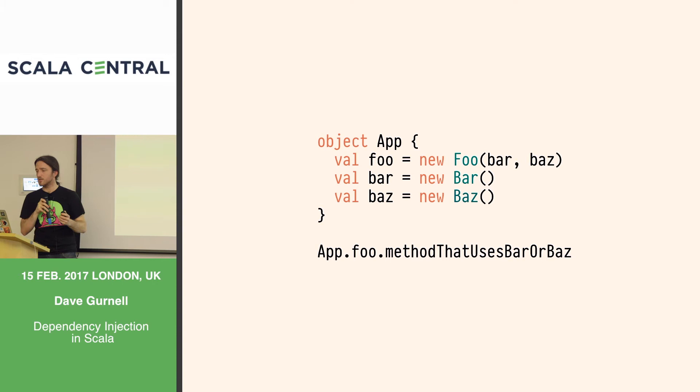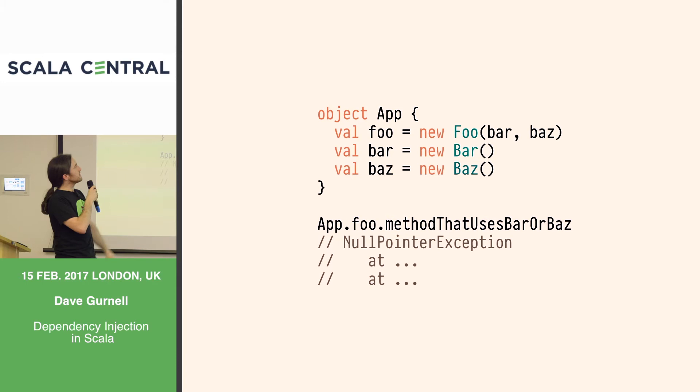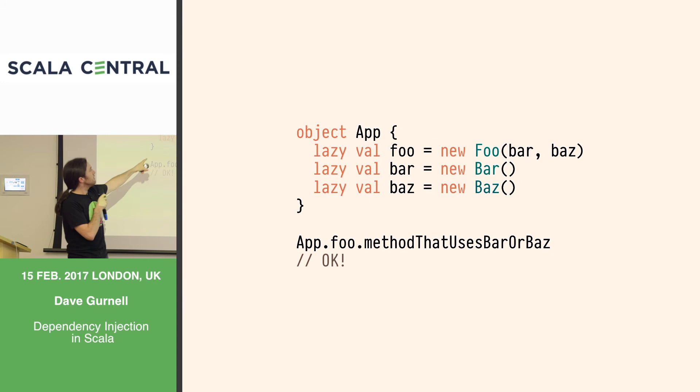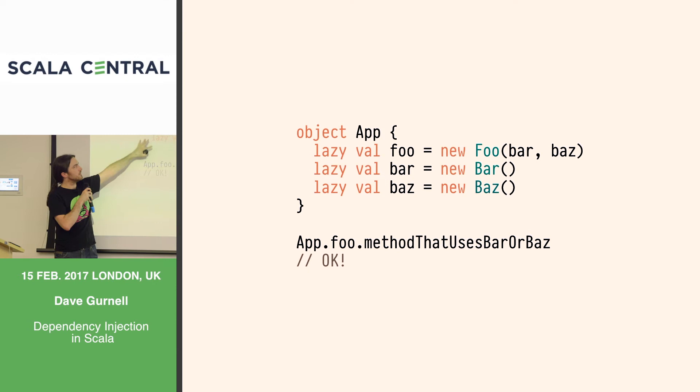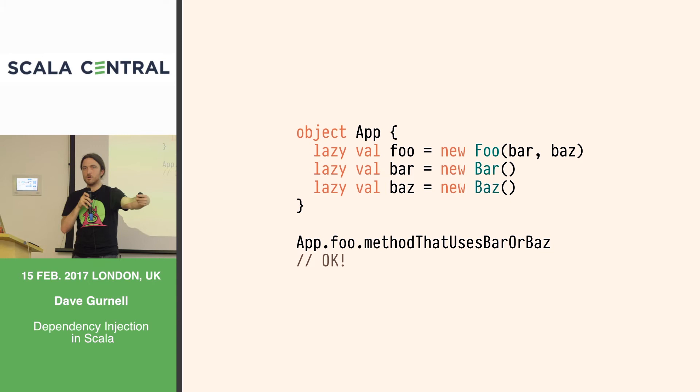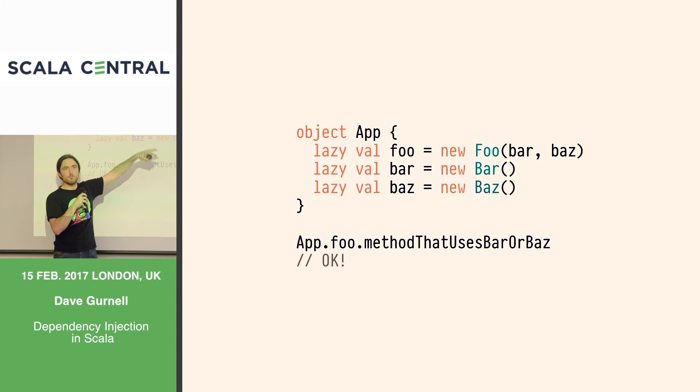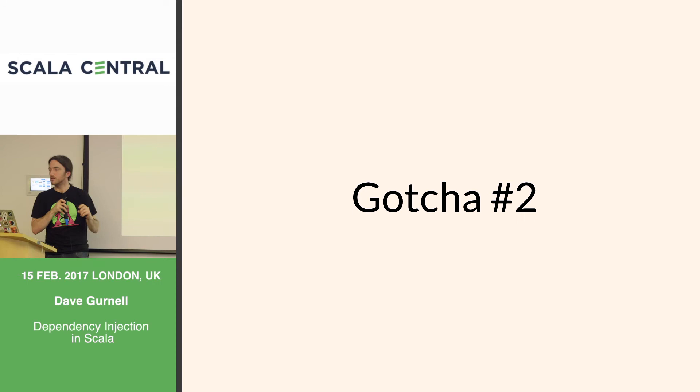Forward references like this are dangerous and should be avoided. But if you can't avoid them, you can mark all your vals as lazy vals. That means when we instantiate the object, we don't call any constructors immediately — we only call them when the variables are first referenced. So when we access foo, it constructs Foo, which constructs Bar and Baz at the right time.